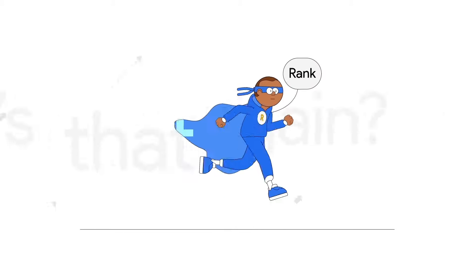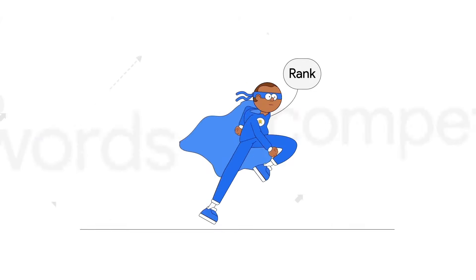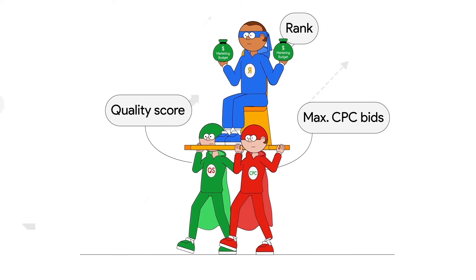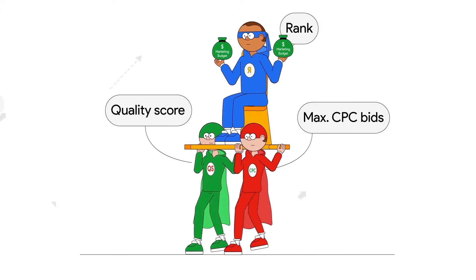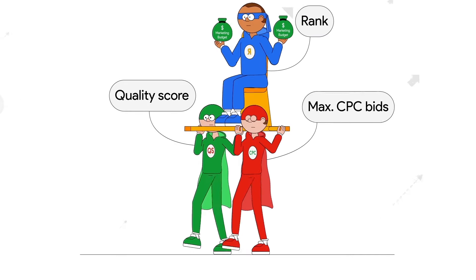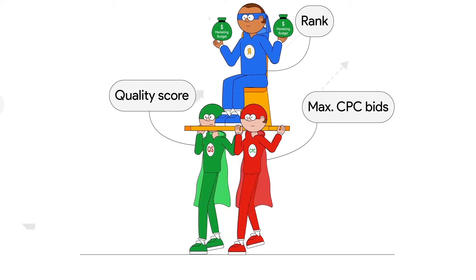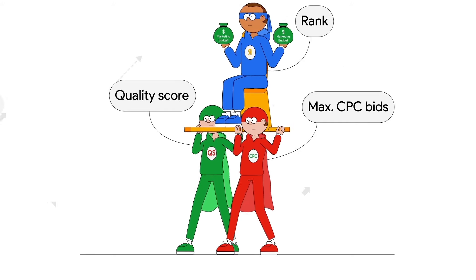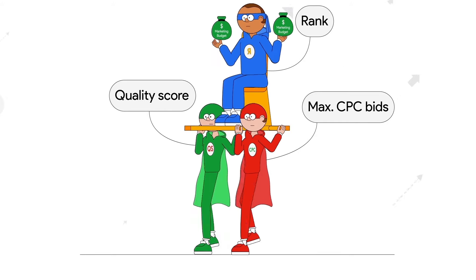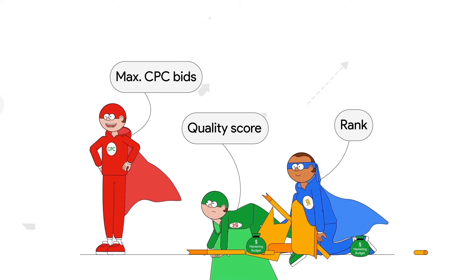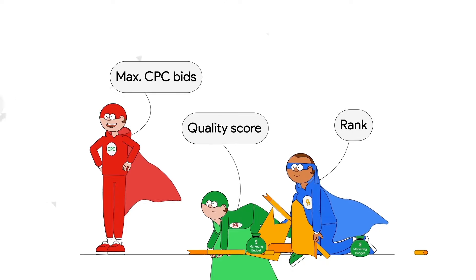Ad rank is the basis for keyword competition. It's calculated as the product of your max CPC bids and quality score. All you need to remember is that to get a higher ad rank, both your max CPC bids and quality scores have to be high. Either a low max CPC bid, a low quality score, or having both low will drop your ad rank and make you lose on impression share.